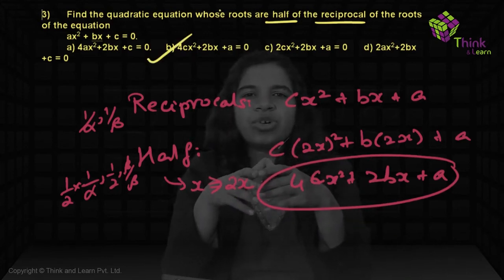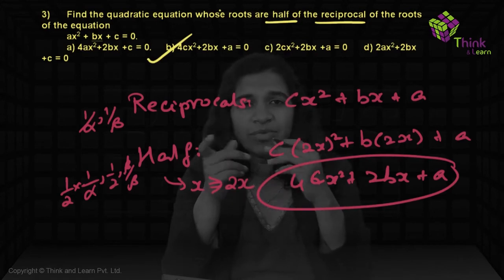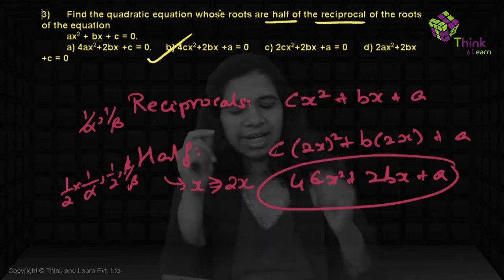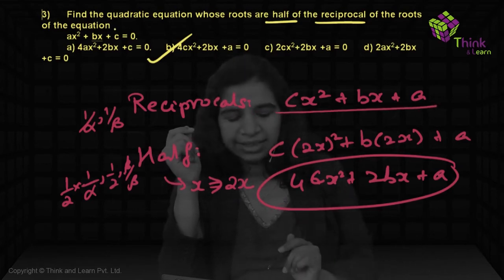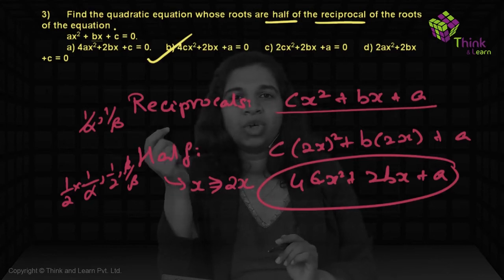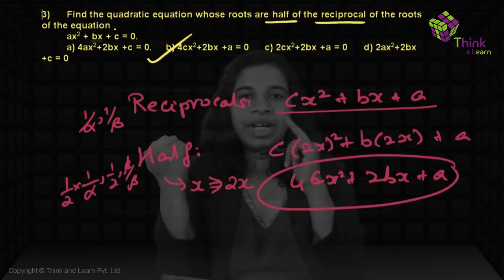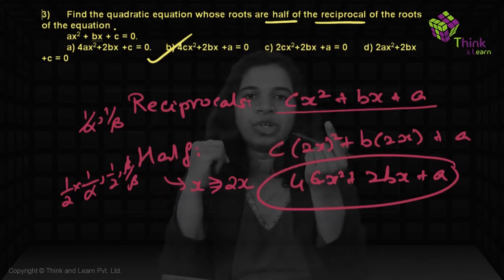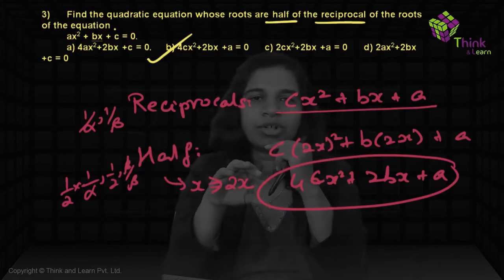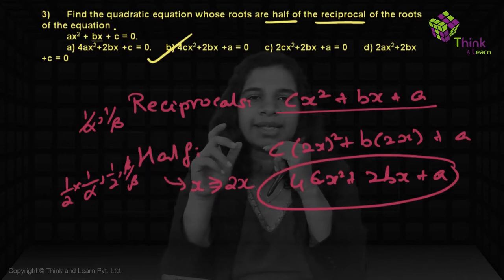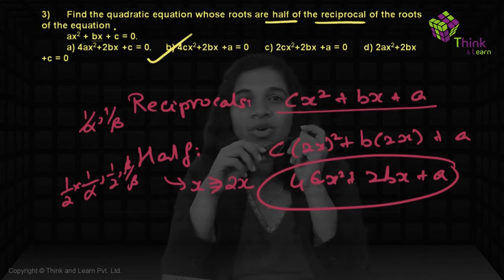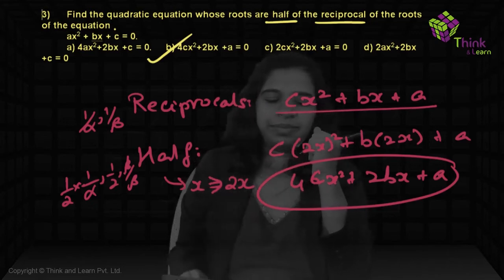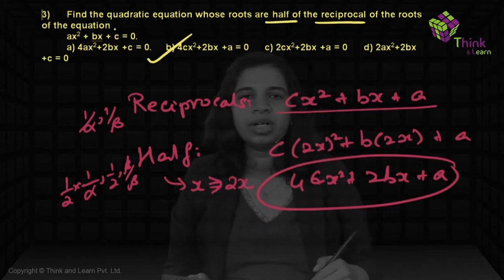It's a simple transformation question. For reciprocals, interchange C and A. For roots becoming half, they are being divided by 2, so we replace x with 2x — we do the opposite of what happens to the root. When it is squared, remember it's (2x)² not 2x², giving 4Cx² + 2Bx + A.